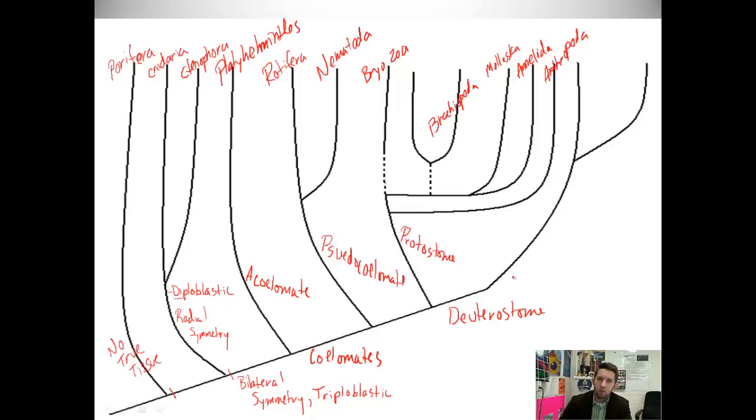Deuterostomes. Remember the blastopore turns into the anus. We've got echinodermata. We have the echinoderms. Echinodermata. I know that's not very well written. I apologize. And us, the chordates.